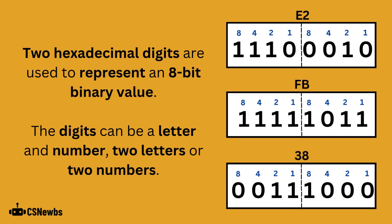Two hexadecimal digits are used to represent an 8-bit binary value. Be aware that this could be a number and a letter, a letter and a number, or two numbers or two letters.